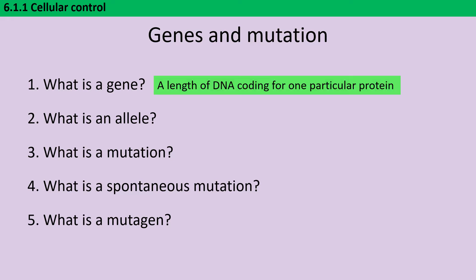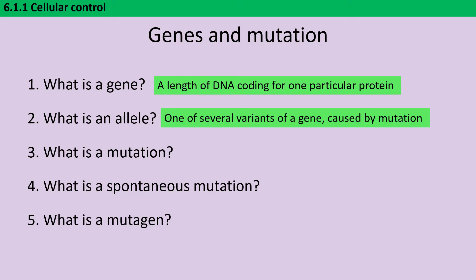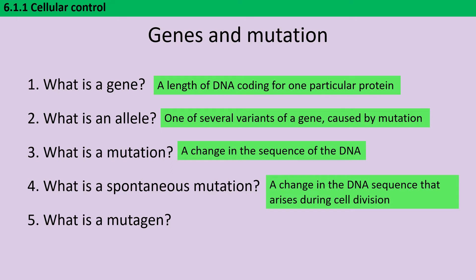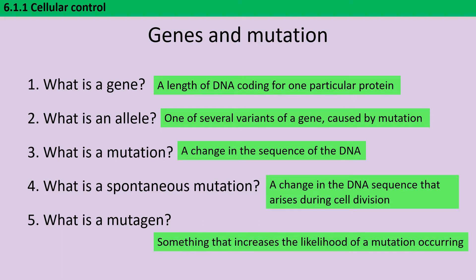An allele is one of several different variants of that gene, which is caused by mutation. A mutation is a change in the sequence of the DNA, and if it's a spontaneous mutation, that means that it's one that's happened during cell division. A mutagen is something that increases the likelihood of mutation occurring.